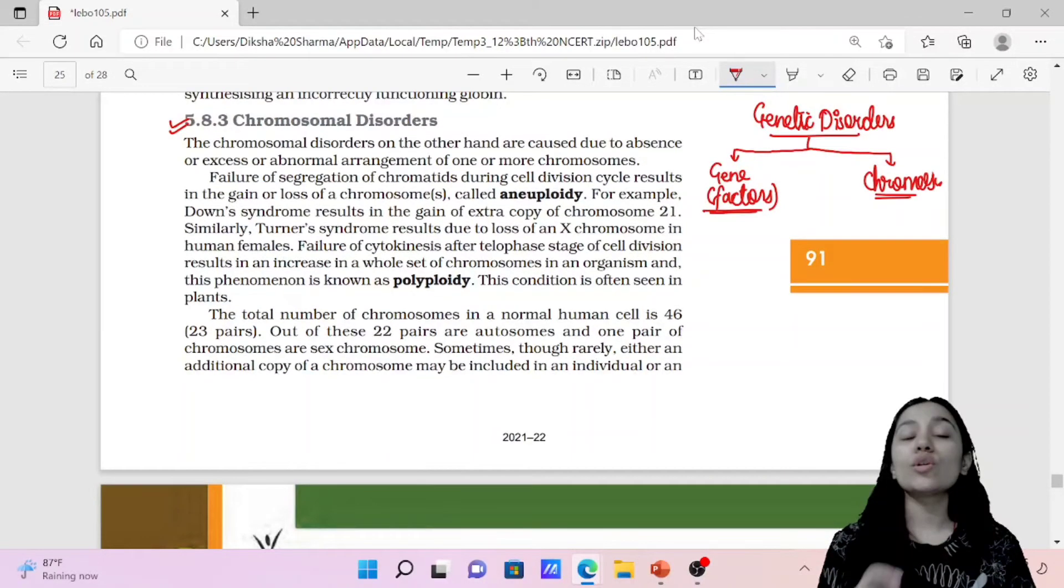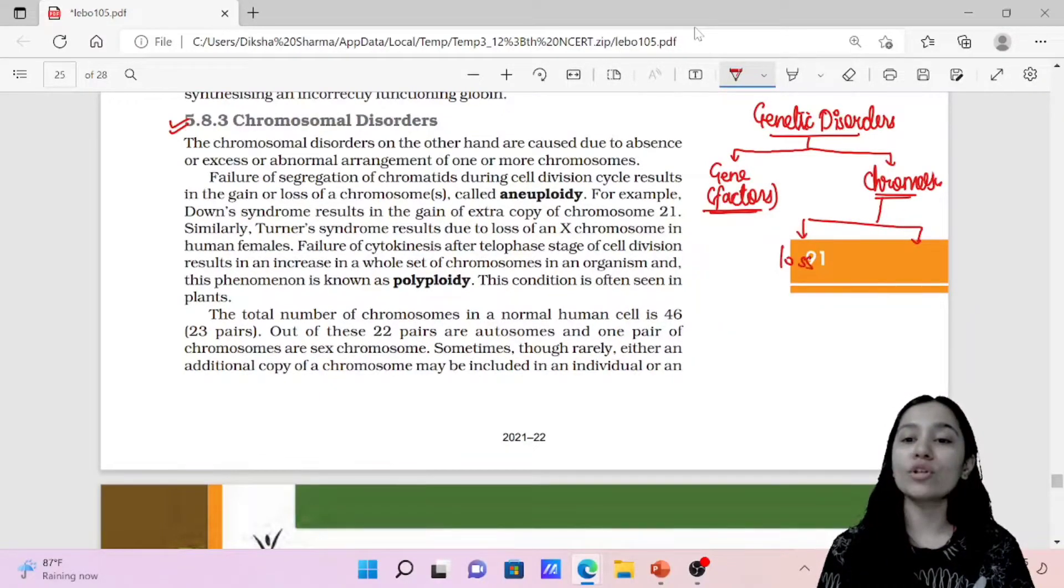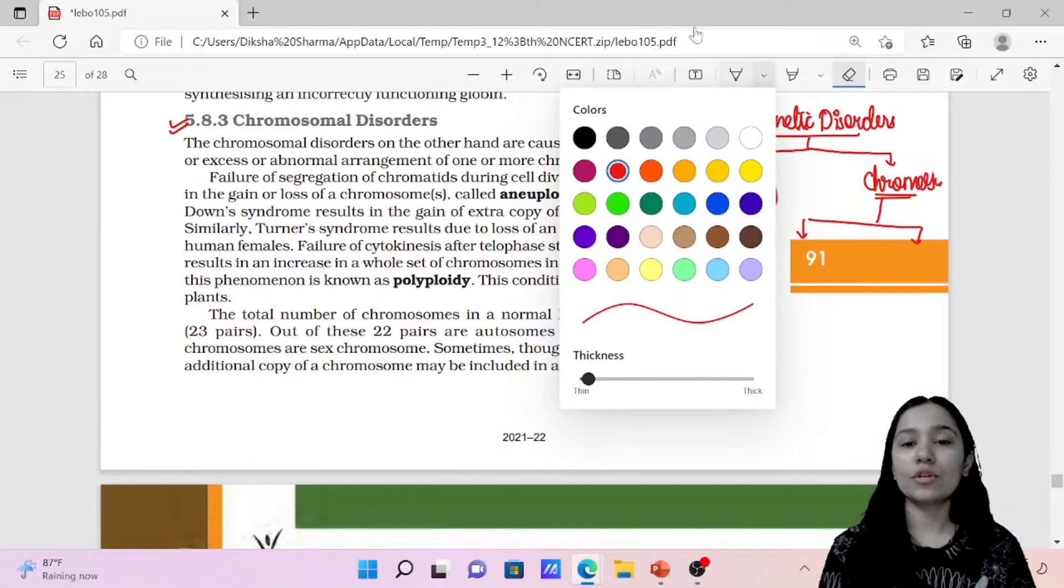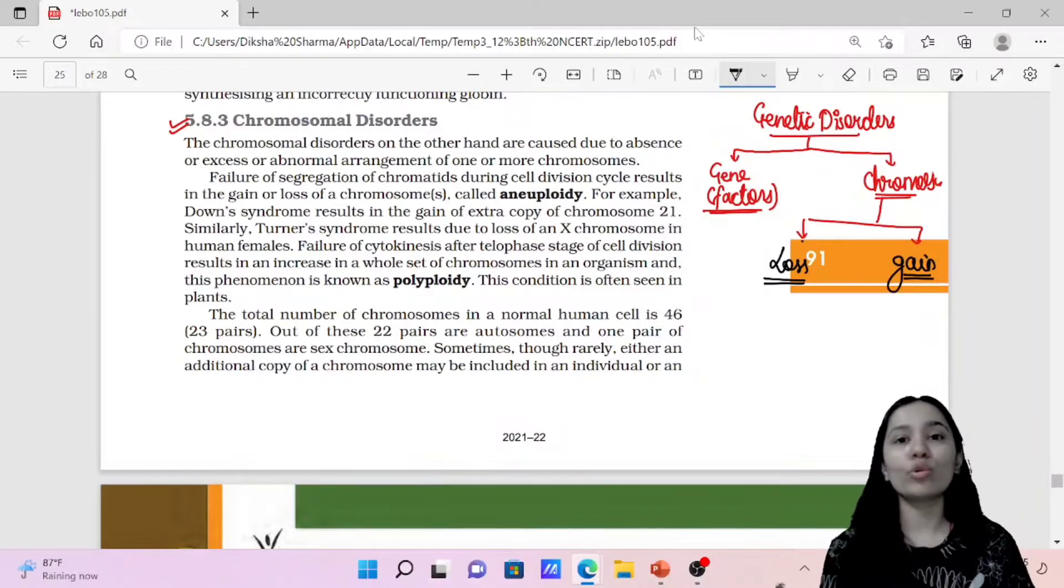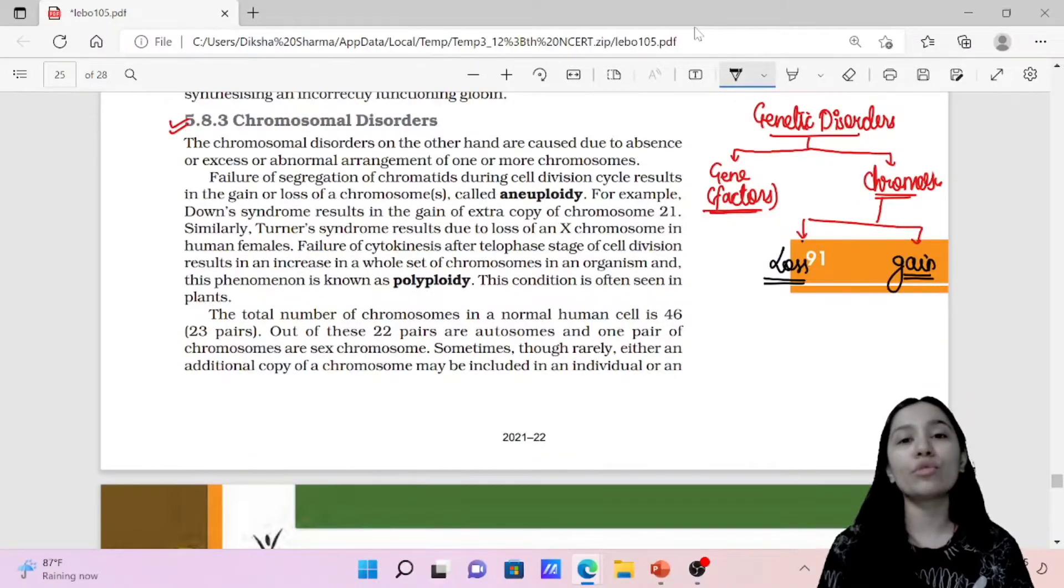We can understand that chromosomal disorders are of two types. First is because of loss of some chromosomes. What is the second condition? Gain of chromosome. If you have added extra chromosomes to your chromosome then you will get a disorder. If the chromosome has decreased, then there will also be a chromosomal disorder and a chromosomal disease.